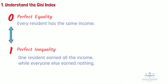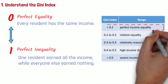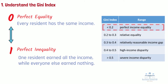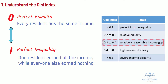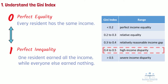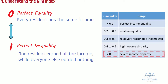Although there are no internationally defined standard cut-off values, it's commonly recognized that a Gini index less than 0.2 corresponds with perfect income equality. 0.2 to 0.3 corresponds with relative equality. 0.3 to 0.4 corresponds with a relatively reasonable income gap. 0.4 to 0.5 corresponds with high income disparity. Above 0.5 corresponds with severe income disparity.